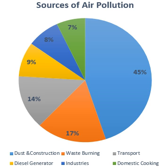In autumn and winter months, large-scale crop residue burning in agriculture fields — a low-cost alternative to mechanical tilling — is a major source of smoke, smog, and particulate pollution. India has a low per capita emissions of greenhouse gases, but the country as a whole is the third-largest emitter after China and the United States.